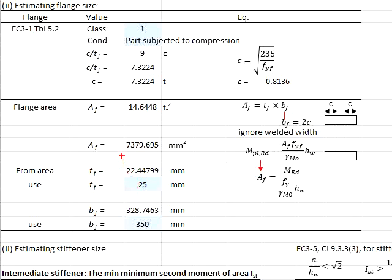Then go back and look into the area required. So the bf is found to be 328.7mm. Again, we choose the bigger section, 350mm. By this stage we have decided the thickness of the flange equals to 25mm and the width of the flange is 350mm.